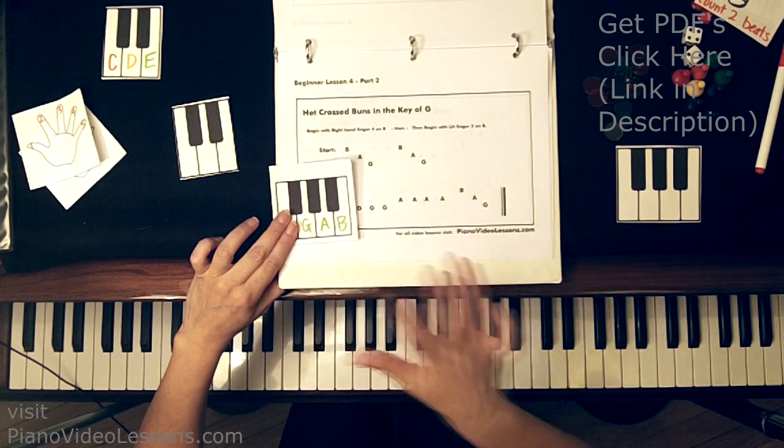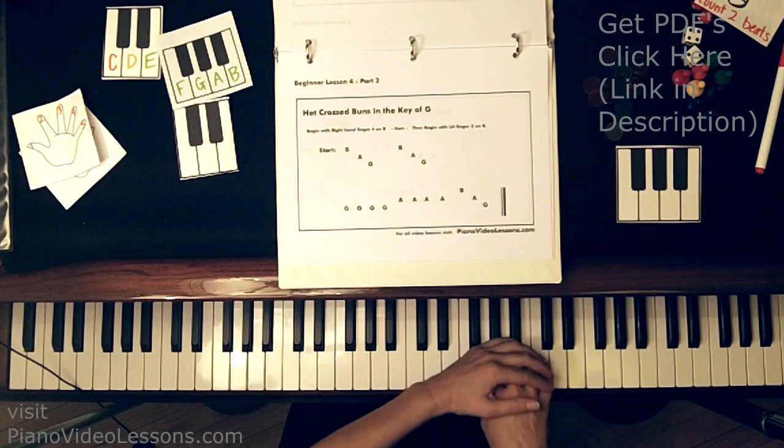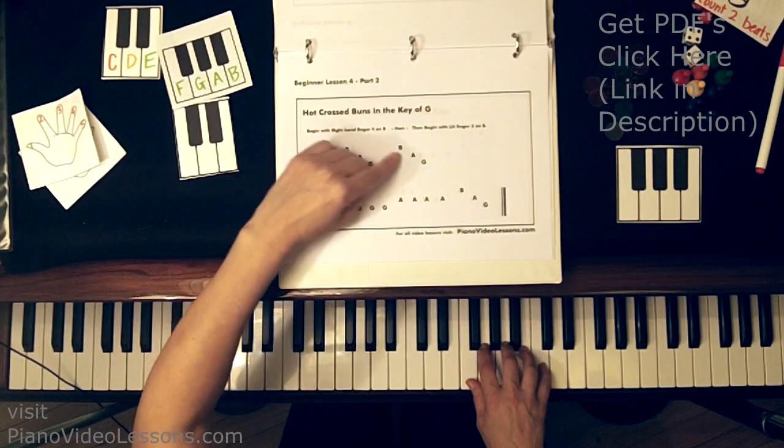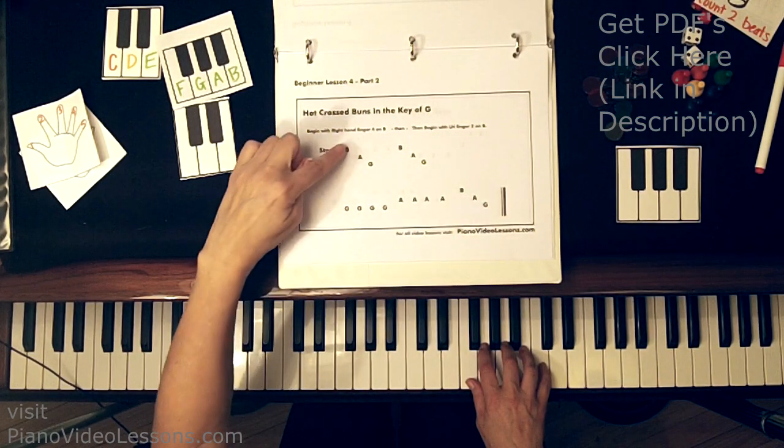Begin with right hand finger 4 on B. So let's find that on the piano, 4 on B. And now we can make sure our hand is in a relaxed and curved position. And it's the same sound, the same song, and we're going to have B, A, G with 4, 3, 2.